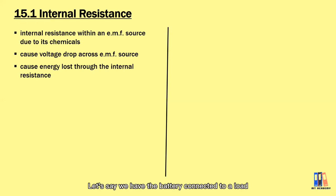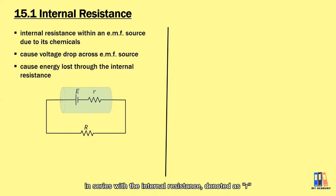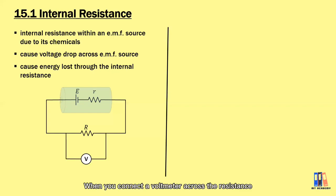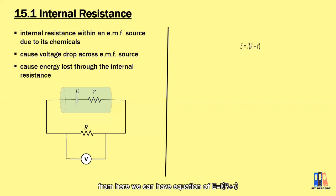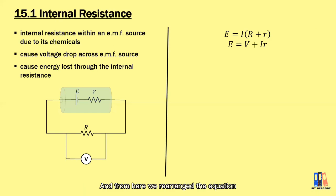Let's say we have a battery connected to a load. You treat the battery as a voltage source E in series with the internal resistance, denoted as r. When you connect a voltmeter across the resistance, we can have the expression V = IR. From here, we get E = I(R + r), and rearranging gives V = E − Ir, where −Ir refers to the voltage drop across the internal resistance.